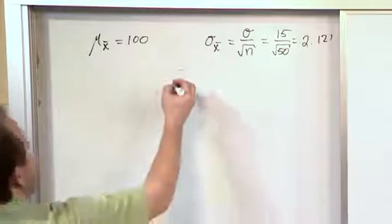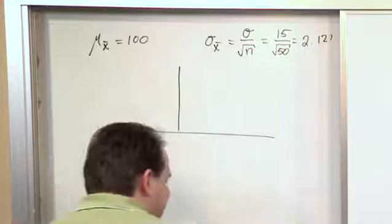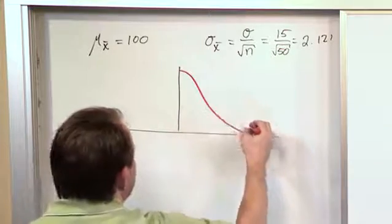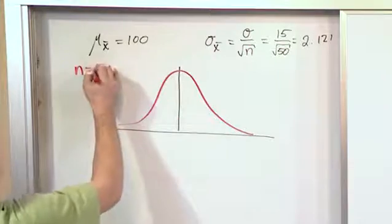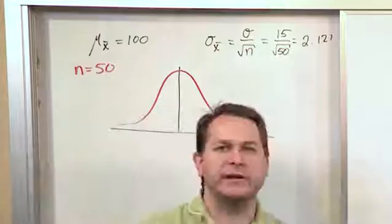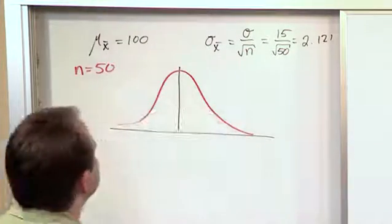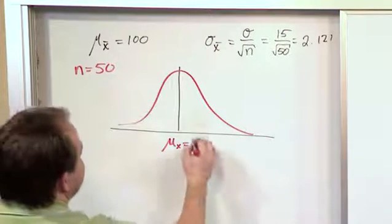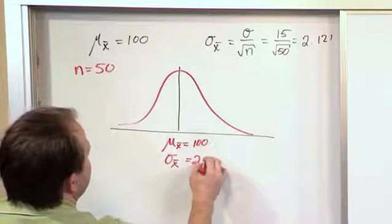Let's take one quick second to draw a picture of what we're looking at now, so you have a mental image of how it's different from the last problem. This will be the sampling distribution of sample means. We know that it's going to look normal because the sample size is 50, which is greater than 30. So when we take 50 people and calculate their average IQ and collect all that data, we expect to get something normal-shaped, with a sample mean of 100 and a standard deviation of 2.121.